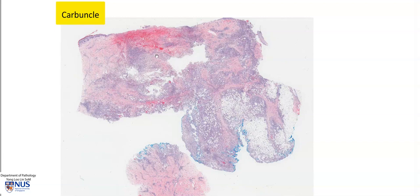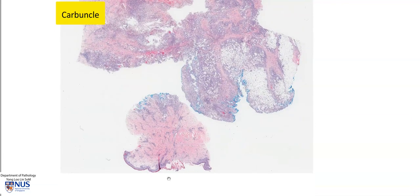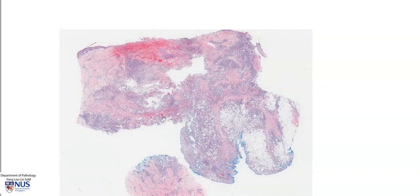So here is the carbuncle, and we are going to focus on this larger tissue piece. There is also a smaller tissue piece here, which is facing the opposite direction with the epidermis located here, and the dermis. In this larger tissue piece, we can just about make out the epidermis on the surface. Here is the dermis, and here is the subcutis.